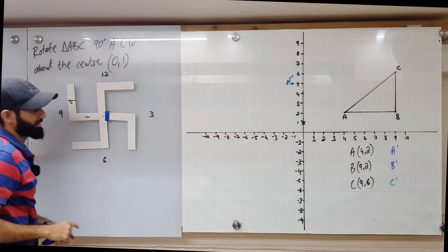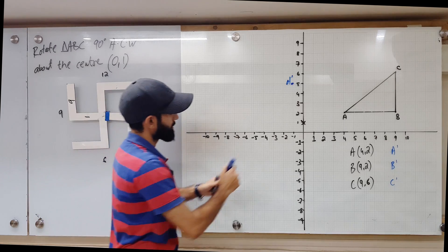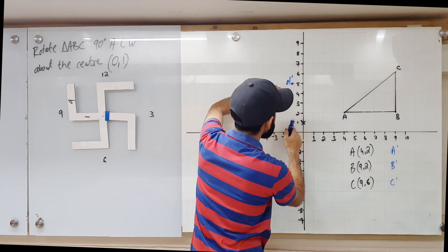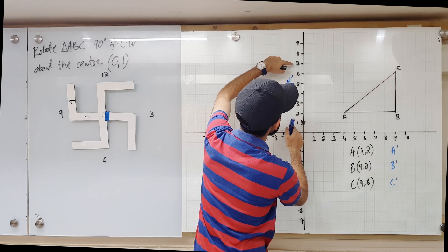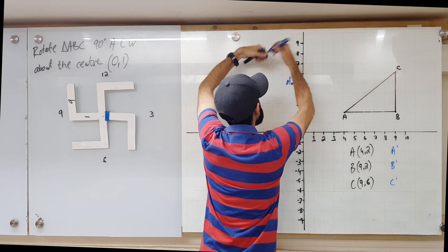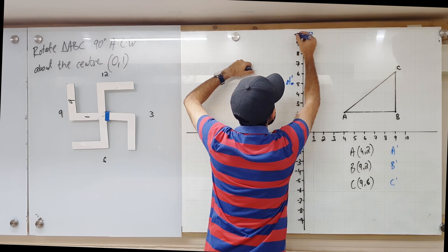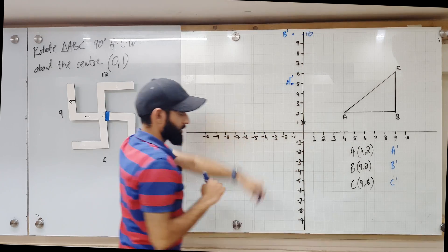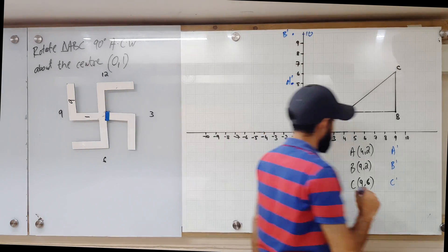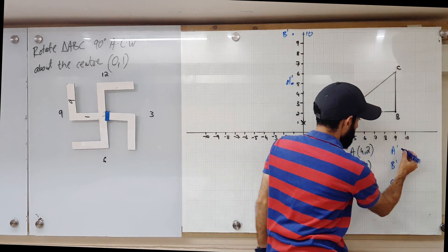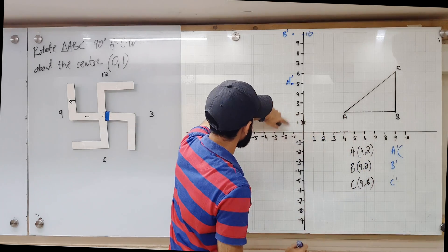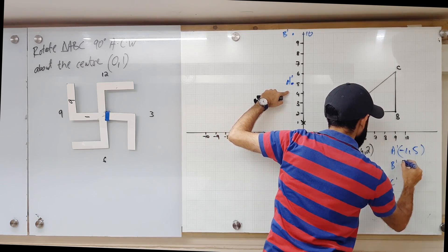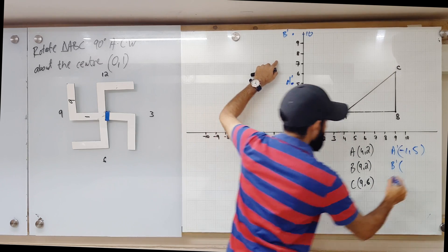From the center: one unit left and then nine units up — one, two, three, four, five, six, seven, eight, nine. This takes me to the image of B. I should also write down the coordinates: the coordinates of A prime are (-1, 5), and the coordinates of B prime are (-1, 10).